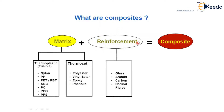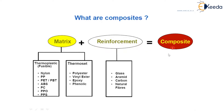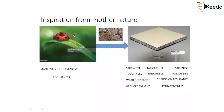The second material — the reinforcement — is added in the form of thread, particle, layer, or other shapes. The purpose is always the same: to increase the strength of the material. Examples of reinforcements include glass, ceramic, carbon, and natural fibers. Combining the matrix plus reinforcement gives us the composite material.